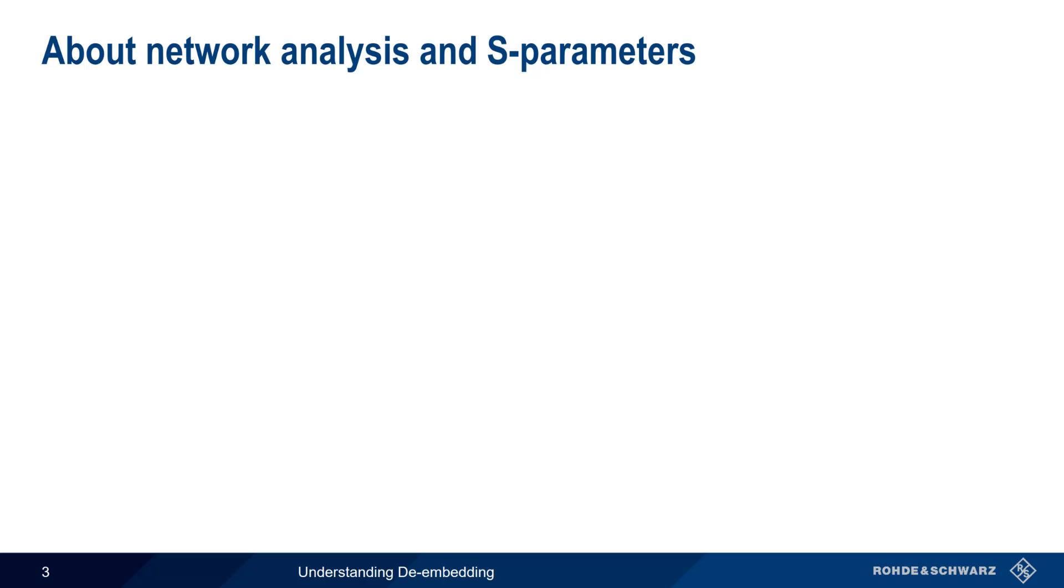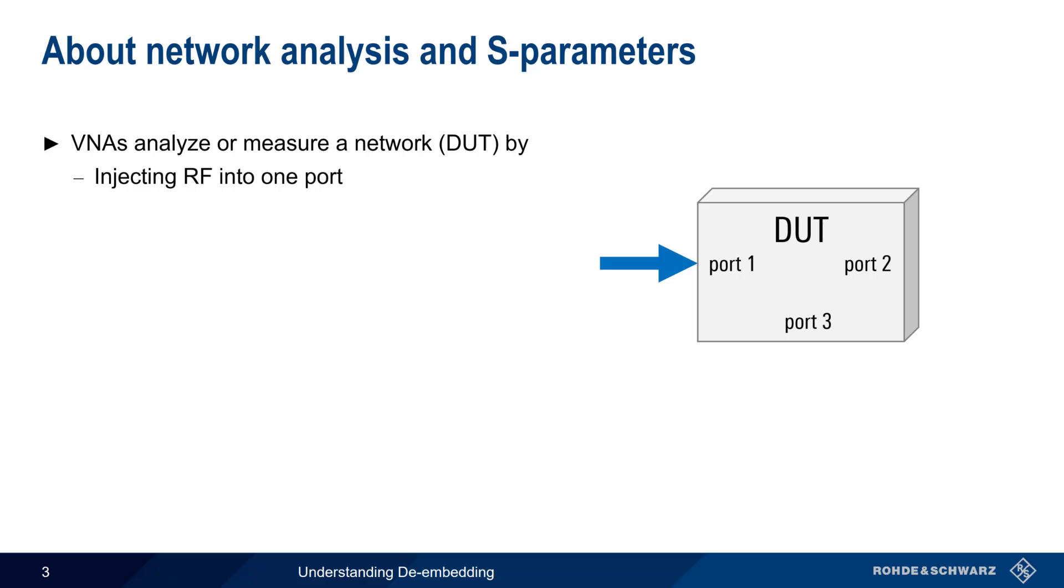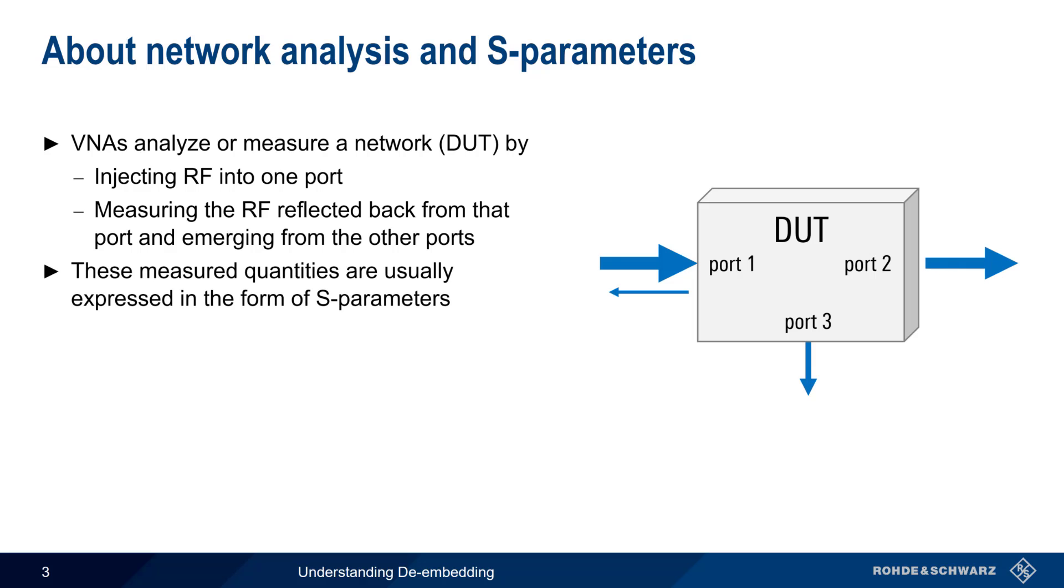As you should already know, the device under test, or DUT, analyzed or measured by a vector network analyzer, is usually a network made up of one or more ports, each of which can pass, absorb, and/or reflect radio frequency energy. The VNA injects RF into one port and then measures the RF reflected back from that port, as well as the RF emerging from any other ports. These measured quantities are usually expressed in the form of S-parameters, which are complex, frequency-dependent values.